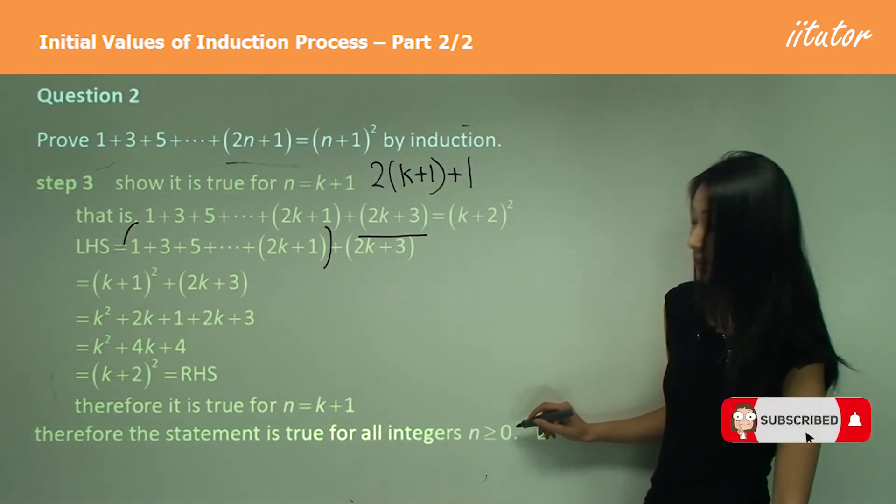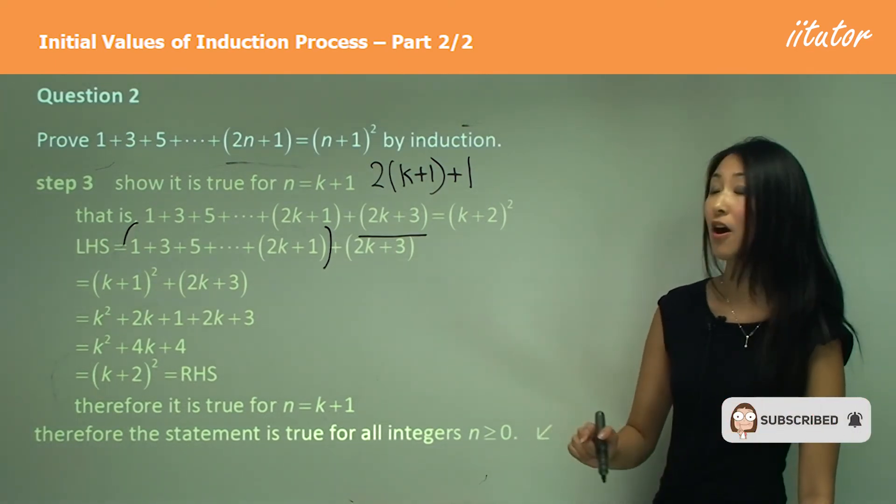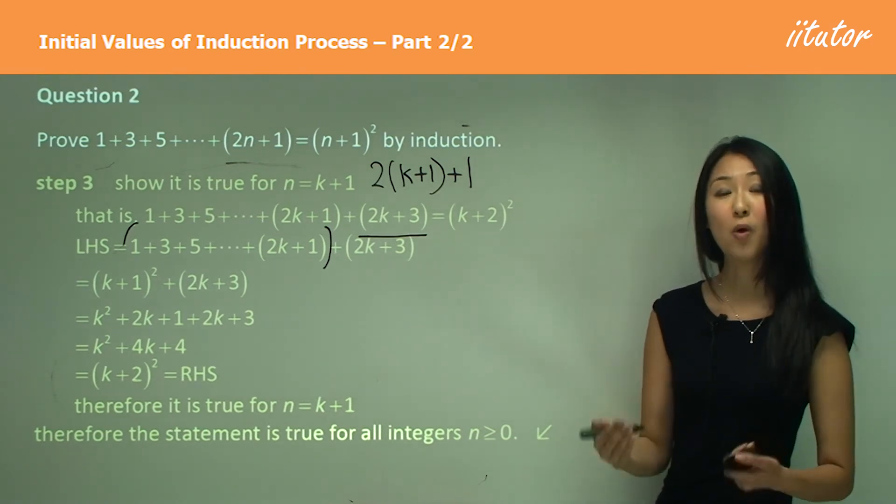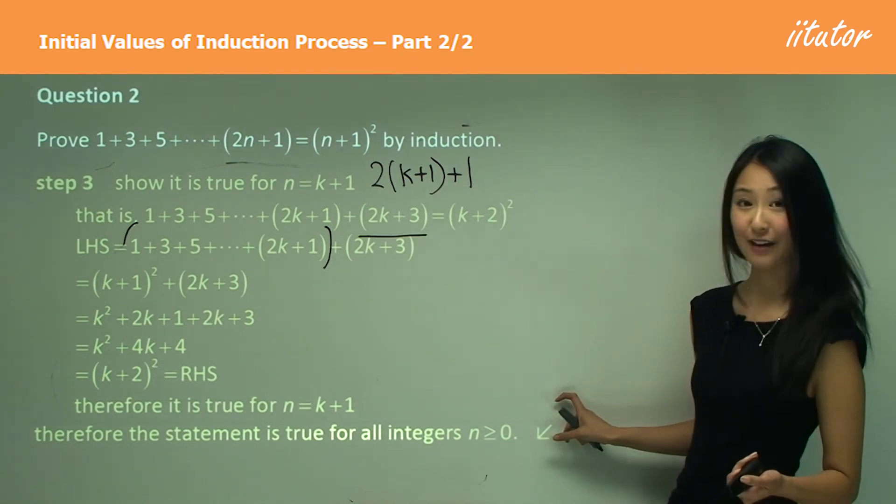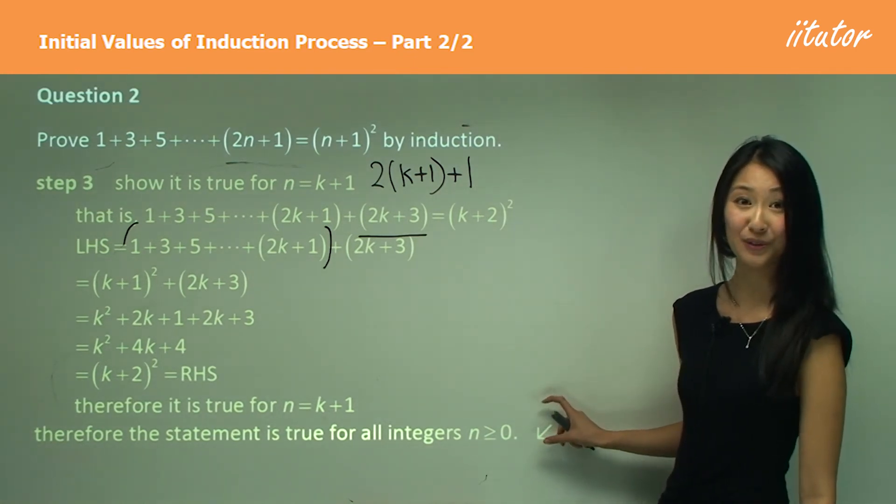Can you see how I've written zero here? And that's because in my first step, I worked out that n equals to zero was my initial value. So be really careful to also write that in your concluding statement.